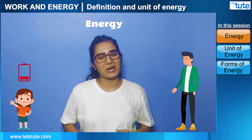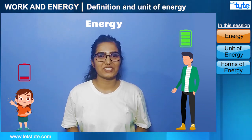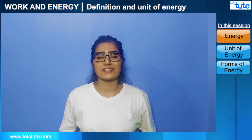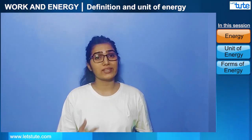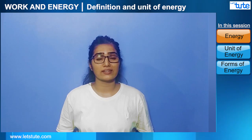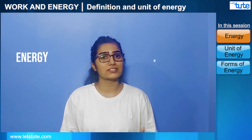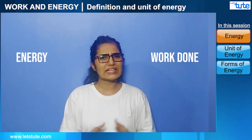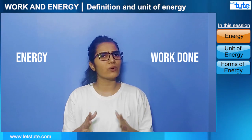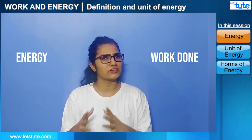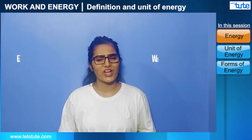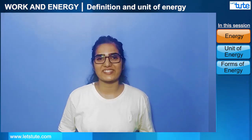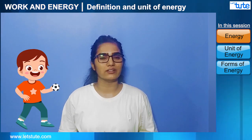The capacity to do work is called energy. So in layman's terms, the girl had less energy and the big guy had more energy. Through this example, we understand that energy and work done are related.